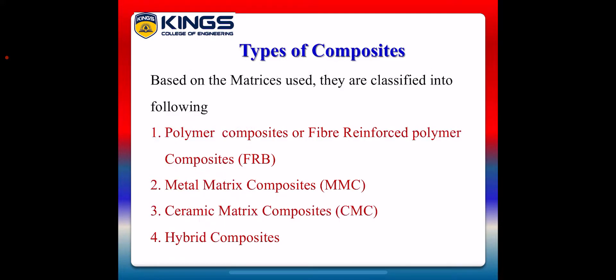Next, we see about types of composites. Based on the matrix used, they are classified into the following four types: one is polymer composites or fiber reinforced polymer composites, simply called FRP. The second type is metal matrix composites, simply called MMC. And finally, hybrid composites.